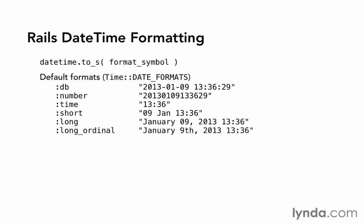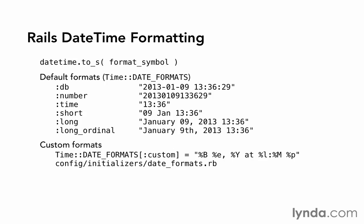The six formats you see listed are all built into Rails by default, but you don't have to use one of those — you can also use your own custom format. You just have to define it. The best place to do that is in your initializers file. Open up config/initializers and put a new file called date_formats.rb. You'll be able to add your own custom definitions, which should look like: Time::DATE_FORMATS — that's a constant — then in square brackets the name you want to assign to your new format, followed by an equal sign and the format string using those same format codes.